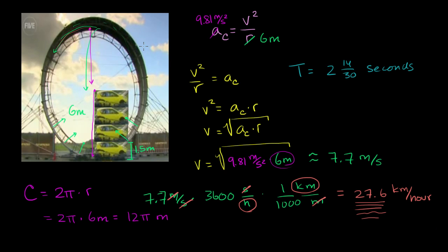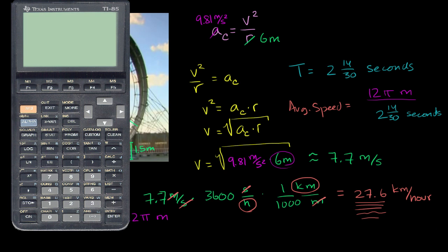So if you want to figure out its average speed - I should say, the velocity is constantly changing because the direction is changing, but the magnitude of the velocity - if we want to figure out the average magnitude of the velocity, or the average speed, we would just have to divide. So let me write it over here. Average speed: the total distance traveled is 12π meters divided by the time required to travel the 12π meters. So that is 2 and 14 over 30 seconds.